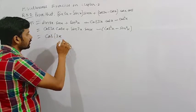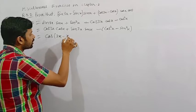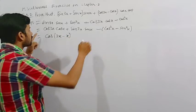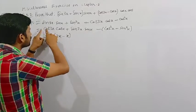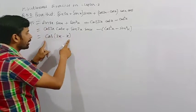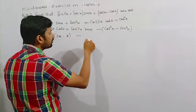So what is a? 3x. And what is b? Simply x. So the value of this term means cos a cos b plus sin a sin b becomes cos(a - b).